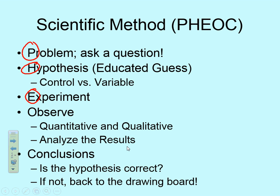Then we're going to do experiments. Let's say our problem was: do cats land on four legs when I drop them? You could hypothesize why or why not, then we would experiment — drop cats from very short distances, making sure we didn't harm a single animal. Then we observe, making qualitative and quantitative observations, analyze results, and collect data. Based on that data, we conclude our results. One thing often overlooked is the hypothesis — right or wrong. If it's wrong, you go back to the drawing board, start everything over, and come up with a new problem and a new hypothesis.